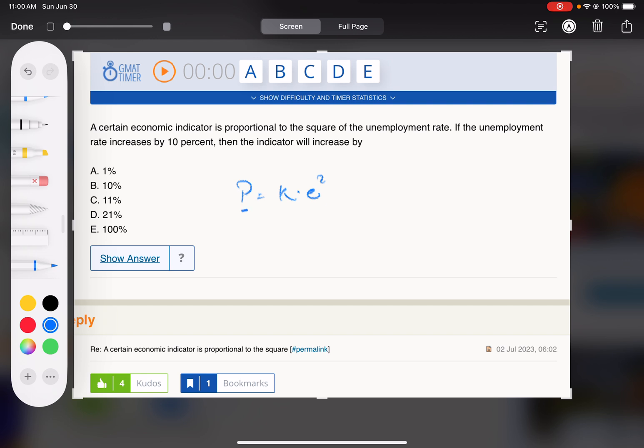The indicator is proportional to the square of the unemployment rate. So what you do here is typically choose numbers to get a provisional value for k. So if 10 equals k times 10 squared, k is 1/10.